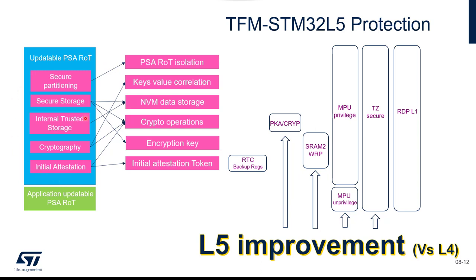For the updatable services, hardware accelerators are available for symmetric and asymmetric cryptography. RTC backup registers and SRAM are used for encryption keys shared by the secure boot. Because the secure boot disappears after execution, it transmits secret values to the services via RTC backup registers, which are protected. The SRAM has an additional mechanism: at RDP level 1, if there is an intrusion, it will be erased. MPU privilege, TrustZone, and RDP level 1 are used to isolate the application-updatable PSA root of trust from the services.